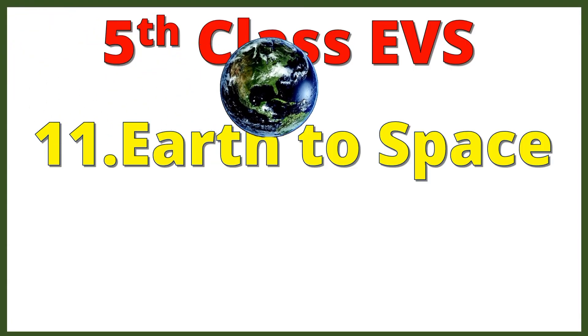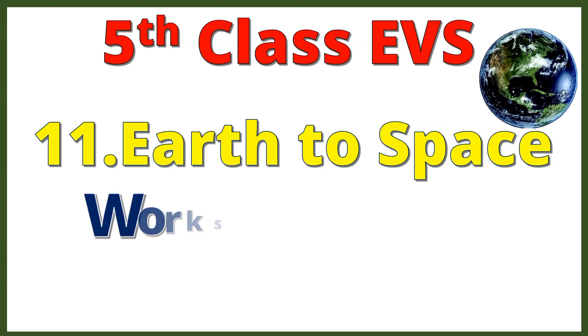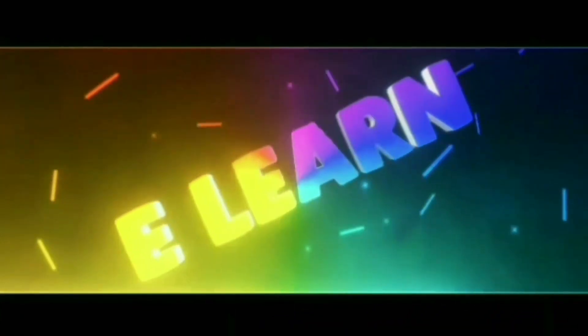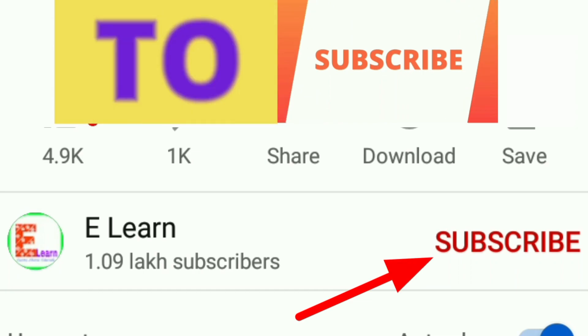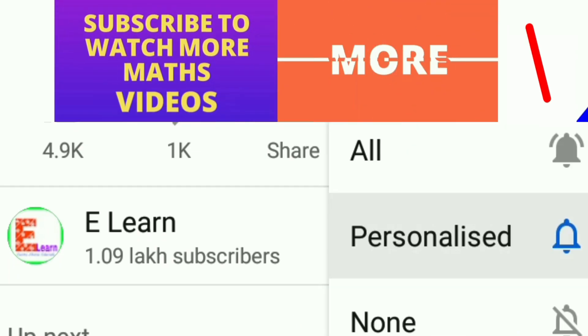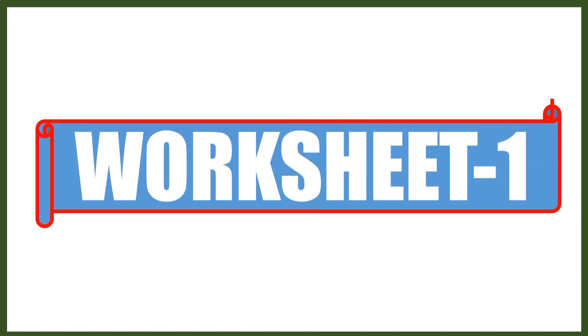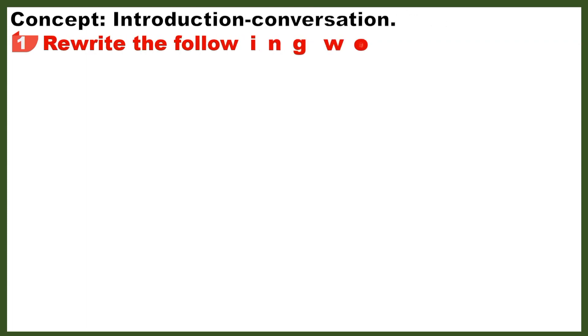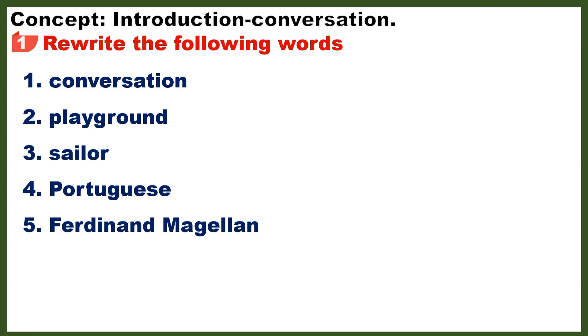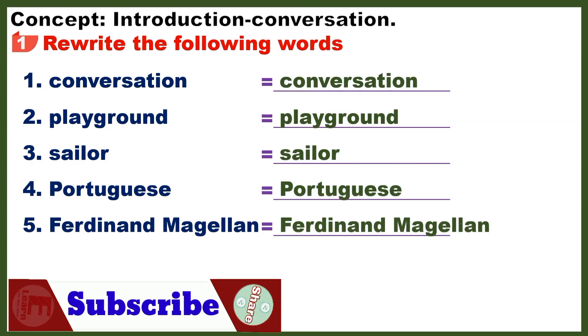5th Class EVS 11th Chapter Earth to Space Worksheets with Answers. Worksheet 1 Concept, Introduction, Conversation. Section 1: Rewrite the following words - Conversation, Playground, Sailor, Portuguese, Ferdinand Magellan.